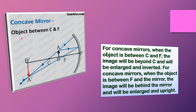Case four: when the object is between C and F, that means between the center of curvature and the focus. For a concave mirror, when the object is between C and F, the image will be beyond C and will be enlarged and inverted.